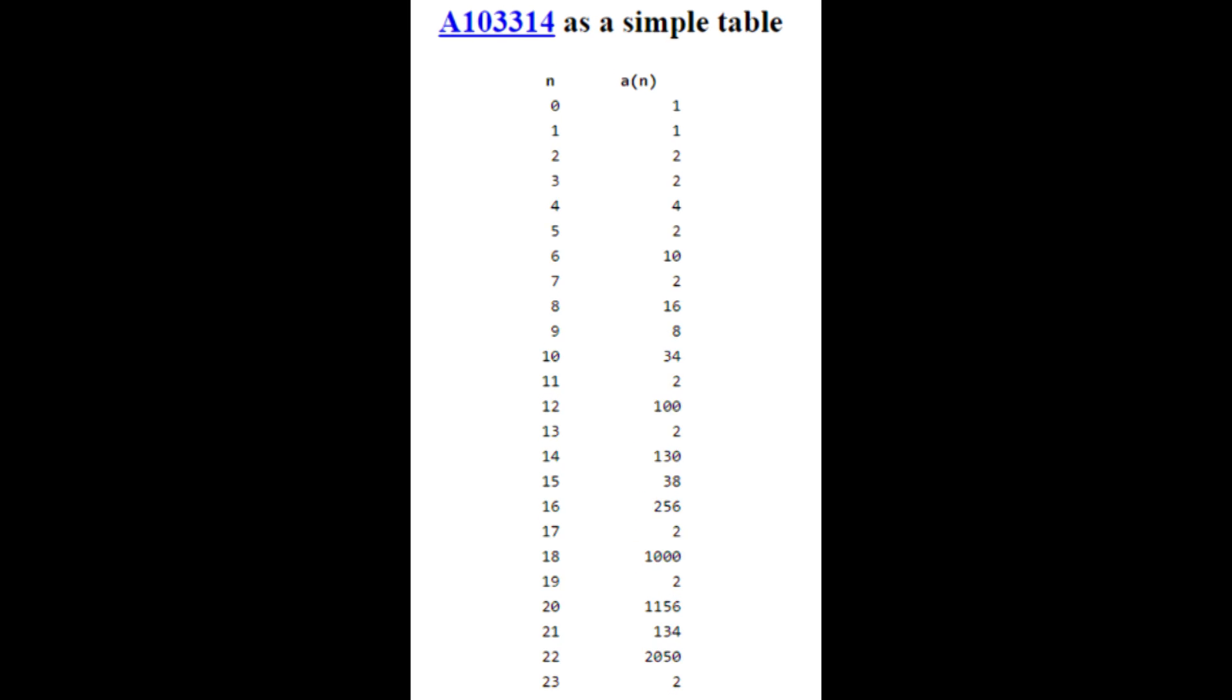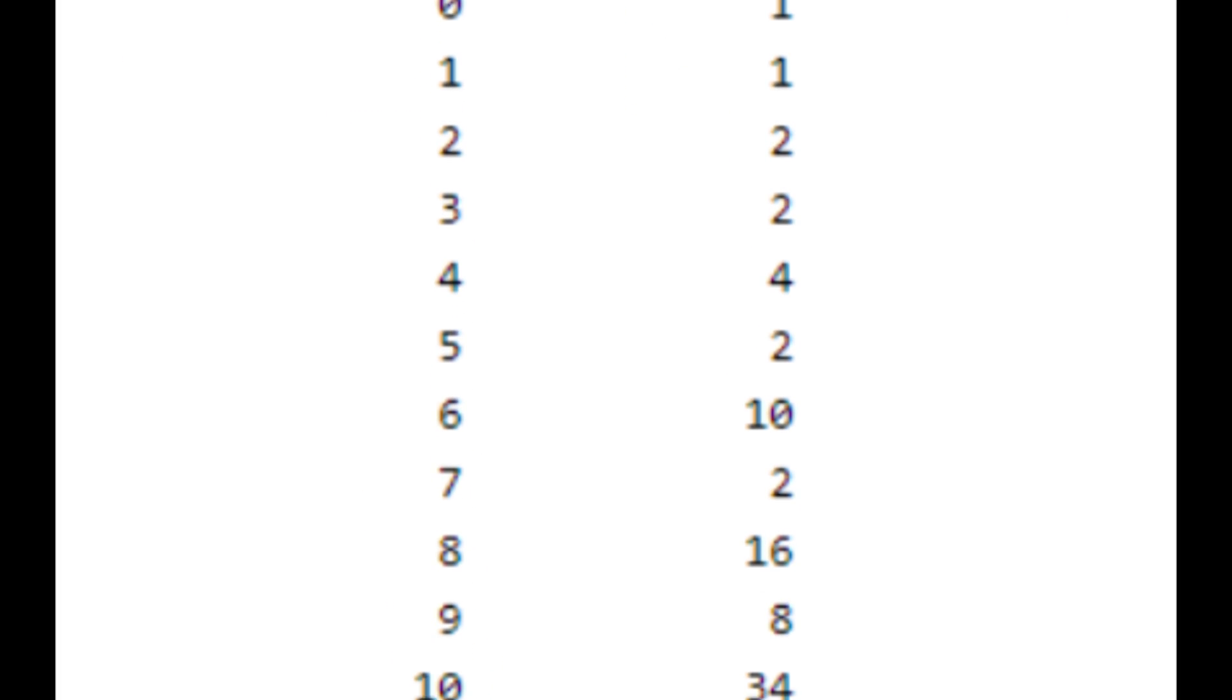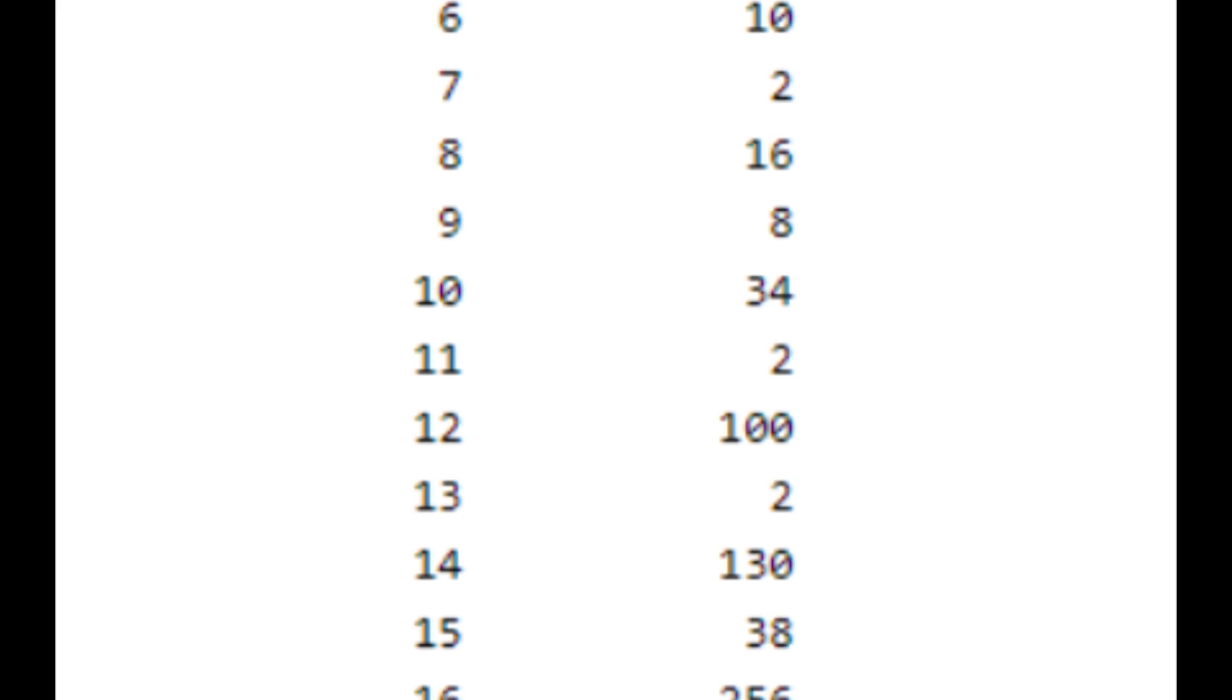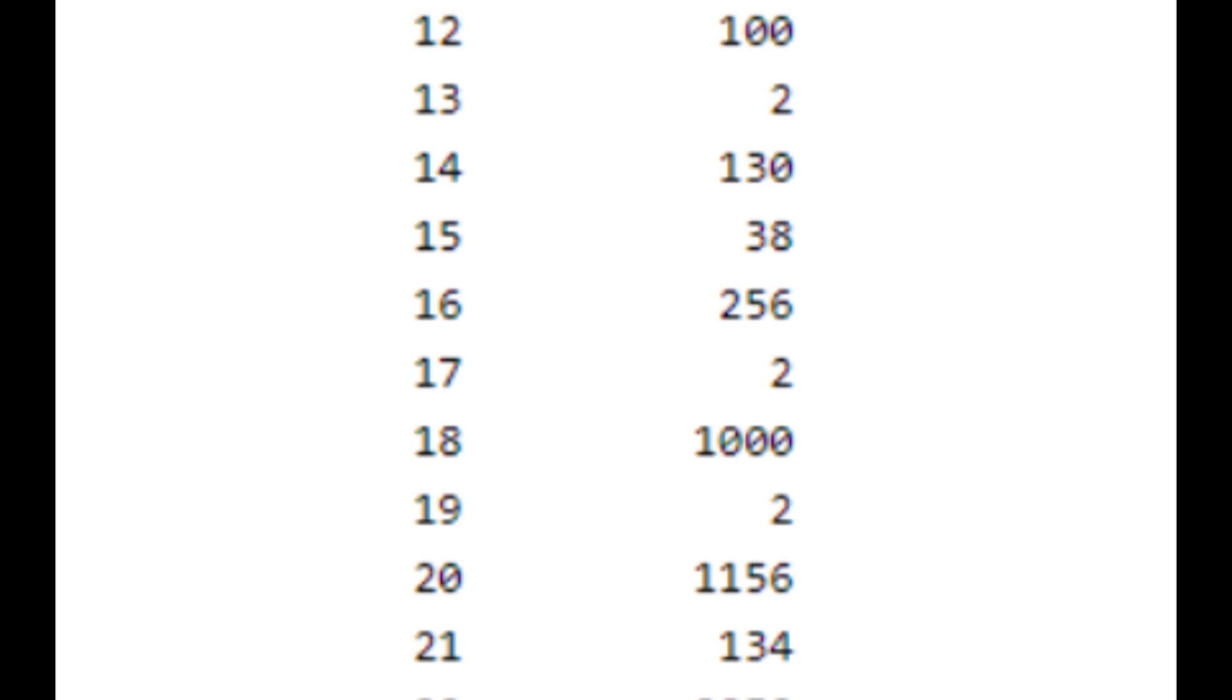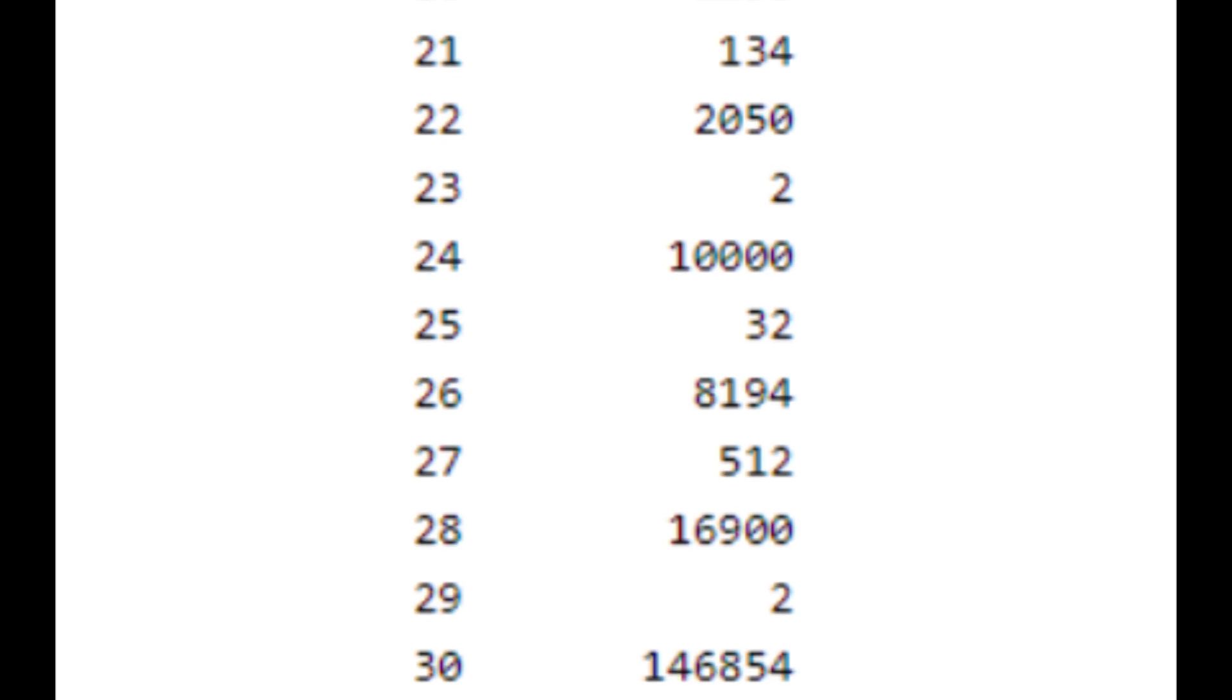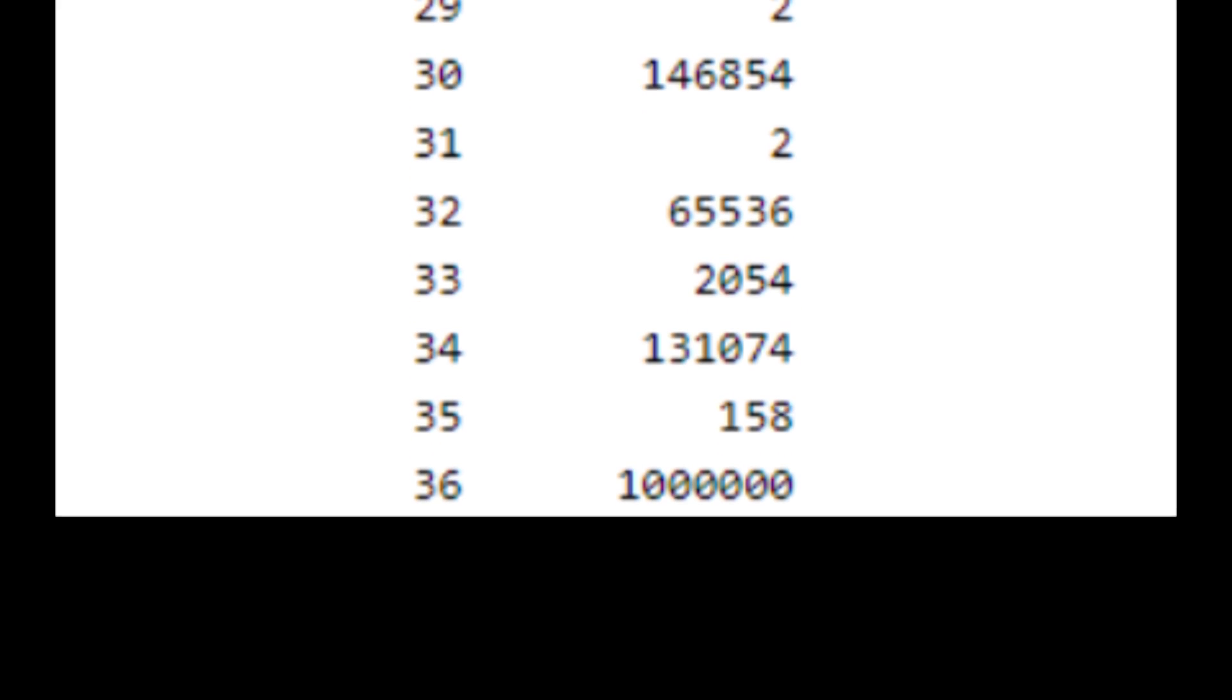Okay, so like, a root of one is a number where if you raise it to some integer exponent, you get one. And for real numbers, there's only one and negative one where you can do that, but when you look at complex numbers, there's a lot more. So if you look at this sequence, right, you can see that when n equals two, there's two subsets of the nth roots of one that add to zero. So what that means is that there's two ways to write zero as the sum of some distinct square roots of one.